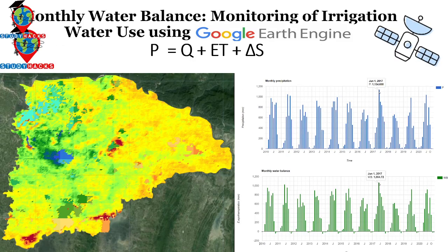In today's session we will discuss how to monitor water balance — mainly monthly water balance — and monitor irrigation water use using Google Earth Engine. The equation is: Precipitation = Evapotranspiration + Surface Runoff + Discharge. So by calculating Precipitation minus Evapotranspiration, we can find out the water surplus or discharge on the surface.